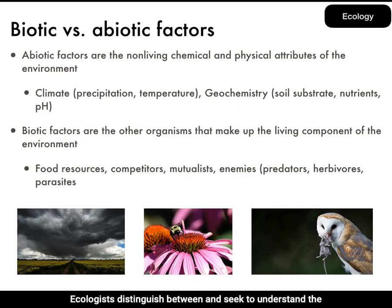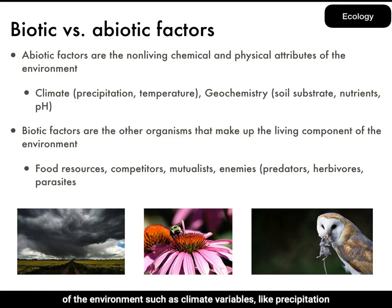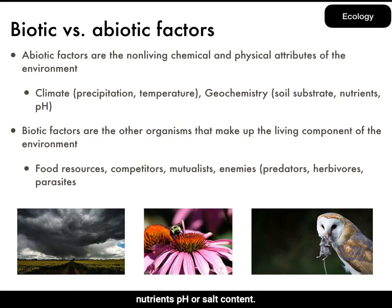Ecologists distinguish between and seek to understand the relationship among biotic and abiotic factors. Abiotic factors are the non-living chemical and physical attributes of the environment, such as climate variables like precipitation or temperature, or geochemical variables like soil, substrate, nutrients, pH, or salt content.